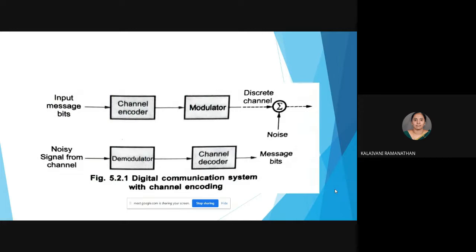The block diagram of a digital communication system with channel coding is as shown here. First, input bits are fed to a channel encoder. The output of the channel encoder is fed to the modulator, from where it is fed to the discrete channel and noise is added there. This noisy signal from the channel is received by the demodulator, and then the demodulated signal is fed to the channel decoder, from which we retrieve the original message bits.